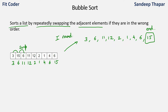In the second round we'll again compare all the elements from the start and swap if they're in the wrong order. So for the second round we'll again start comparing adjacent elements from the beginning. We compare 3 and 6 — these are in the right order, so nothing needs to be done. Then we compare 6 and 11 — also in the right order. Then we compare 11 and 12 — these are in the right order too.